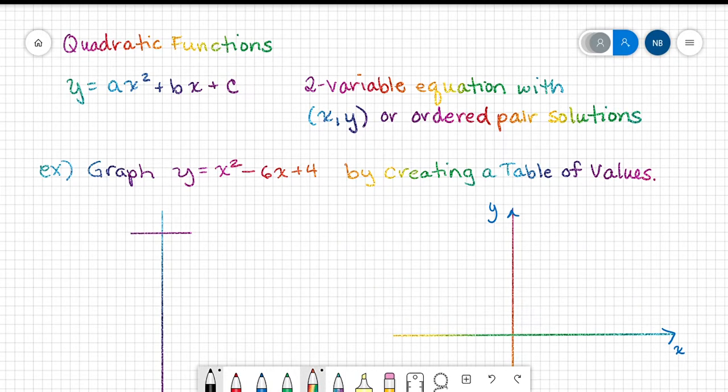Alright, we're now going to explore quadratic functions, which is a function of the form y equals ax squared plus bx plus c. This is a two-variable equation with x, y, or ordered pair solutions. Now we've previously graphed linear functions, which is y equals mx plus b, to name the slope-intercept form, and the graphs of those are straight lines. But what's going to happen when the degree of the polynomial is two? So a quadratic function has two variables, y is isolated in the standard or general form, and it's equal to ax squared plus bx plus c.